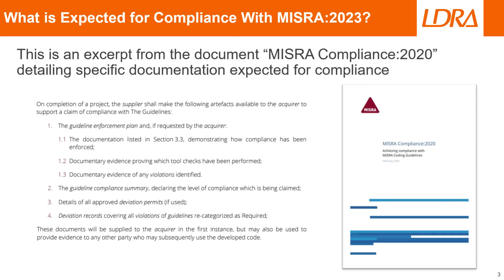Looking at the excerpt from this document, our MISRA compliance really comes down to four main pieces of documentation that we'll need to provide in order to claim compliance with MISRA. The first thing we're going to need is what's called a guideline enforcement plan. This is a document that serves as evidence showing how we actually enforced our guidelines — what tools we used, what violations were identified, and how we fixed them.